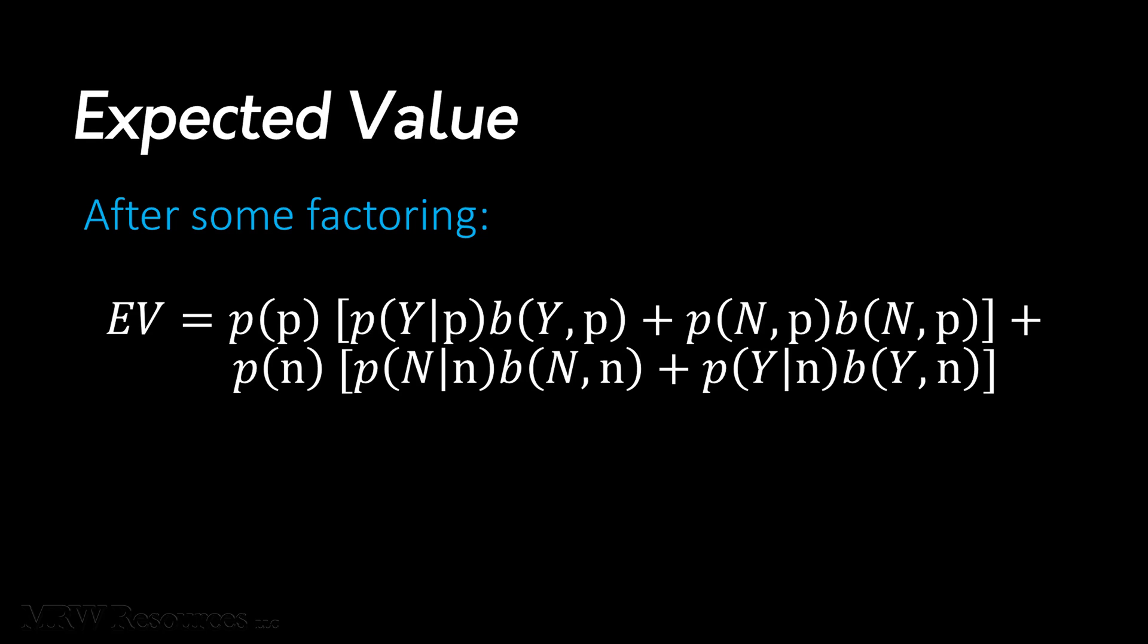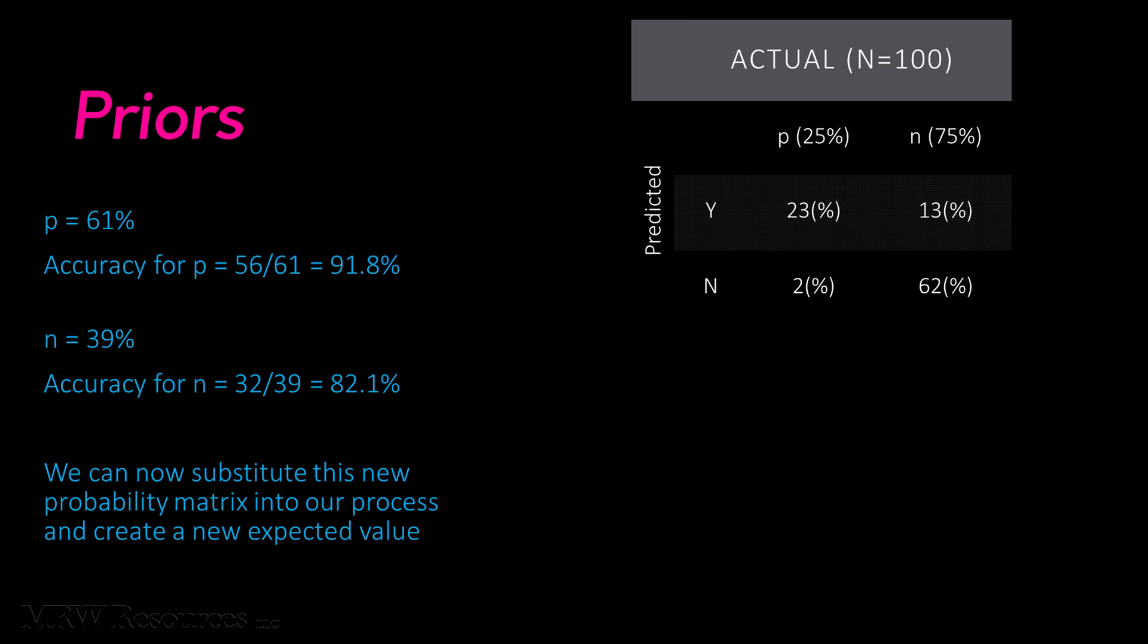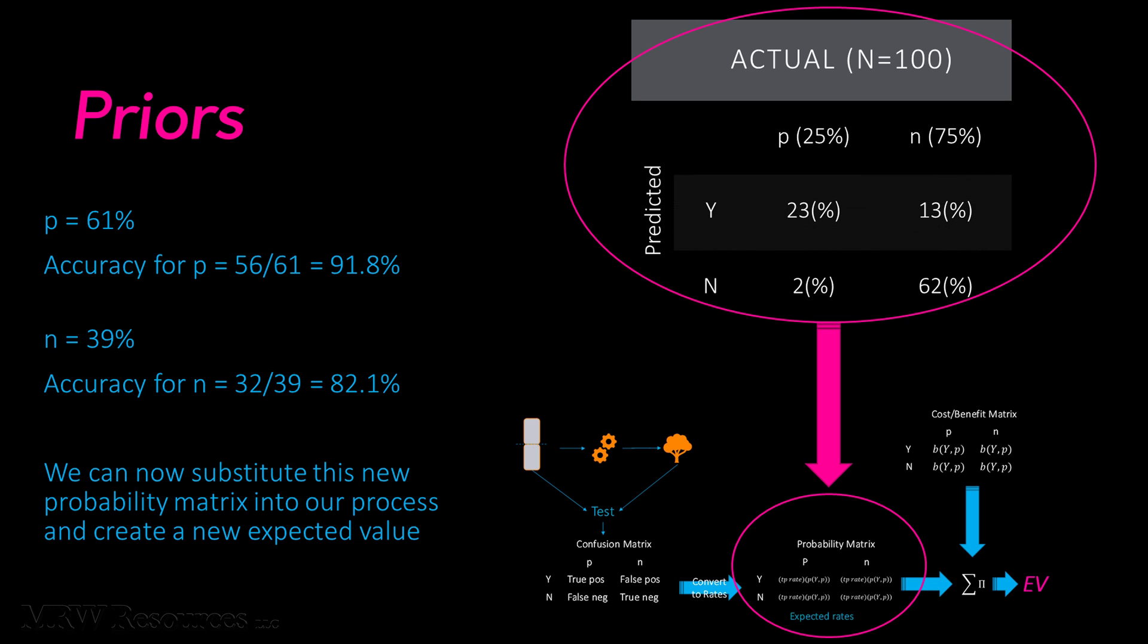Now we can not only compare different models, we can also compare how the models perform given different potential distributions of our classes. If we go back to our visual model of the expected value framework, we can apply our accuracy rates for each class to our expected population distribution and come up with a new probability matrix. We can now drop our new probability matrix into the expected value framework, and we're able to calculate that new EV for our model. In fact, we can test the robustness of our model by seeing how well it performs with several different priors. This makes the expected value framework extremely powerful for building business cases for data mining efforts. We'll discuss robustness in more detail in upcoming videos.